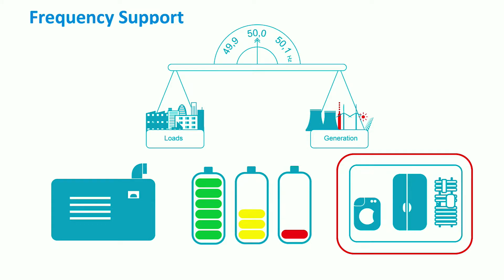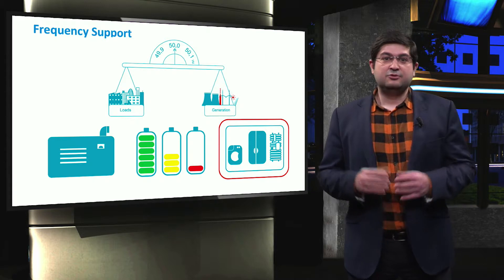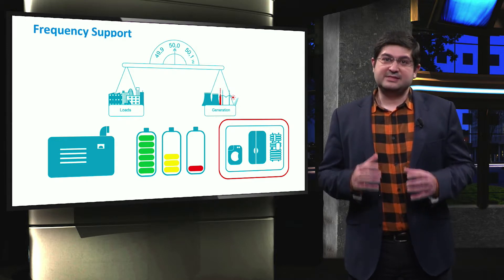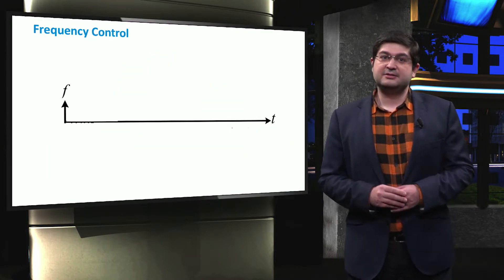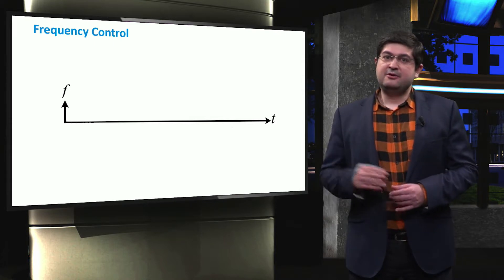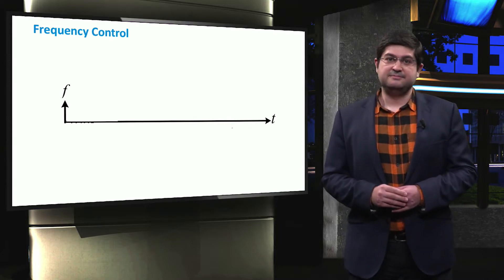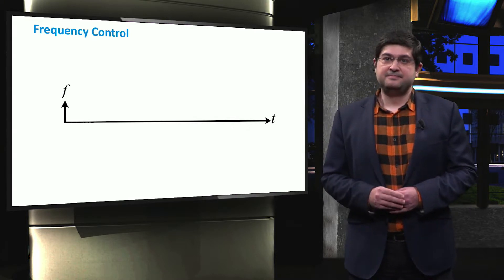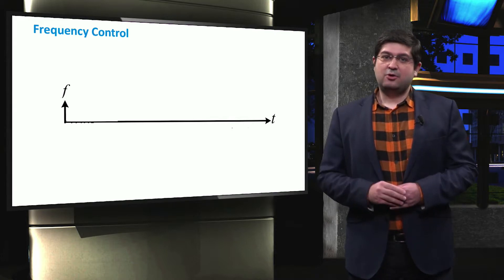The loads can also be controlled and managed in such a way that the frequency is better supported in microgrids. Note that electrical loads are not able to independently maintain the frequency, while diesel engines and batteries are able to keep the frequency stable during the standalone mode. Let's now discuss the frequency control in an islanded microgrid for two types of disturbances: firstly, the case in which generating units are disconnected; and secondly, an islanded microgrid in which loads are disconnected. While the first disturbance will create an under-frequency event, the second one will lead to an over-frequency event.